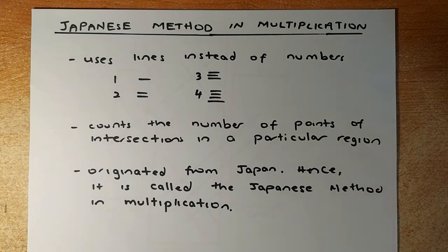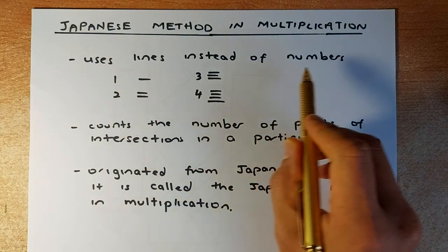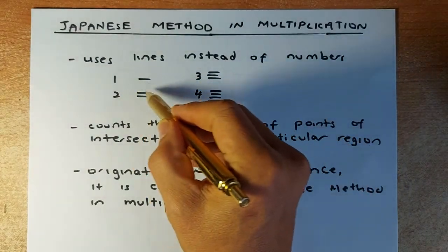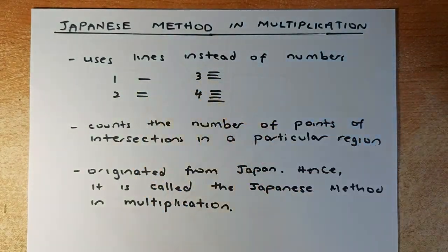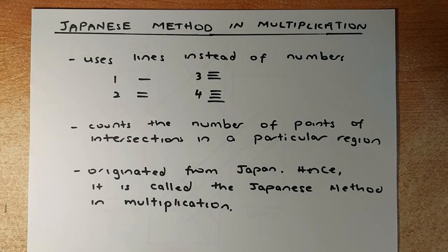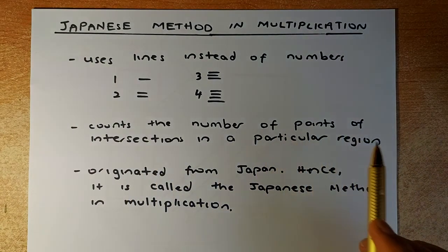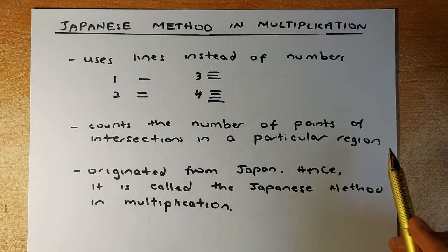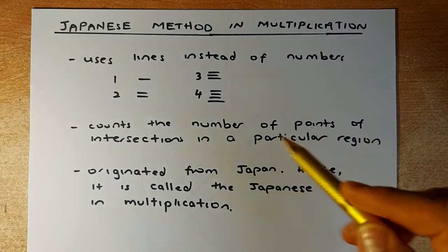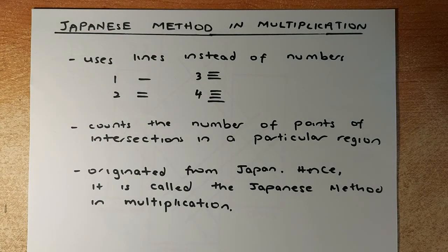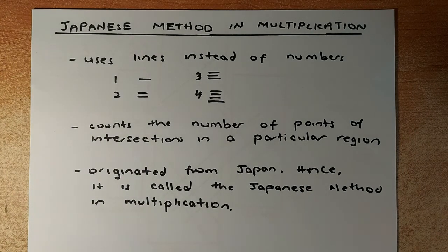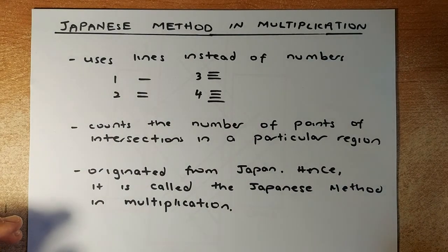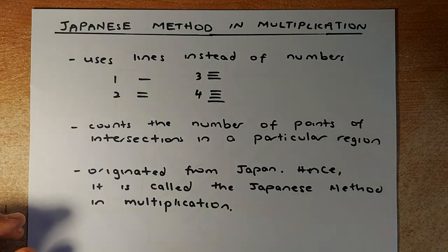So the Japanese way uses lines instead of numbers. Instead of writing 1, 2, 3, 4, they draw one line, two lines, three lines and four lines and so forth. The idea is we are going to count the number of points of intersection in a particular region. The region is made up of the ones region, the tens region, and also the hundreds region. This method originated from Japan and is called the Japanese method in multiplication. So let's look at the three examples.